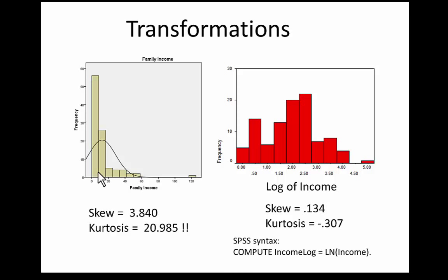Even the log of family income is not distributed close enough to normal to be confident using a z-distribution to estimate probabilities. In fact, it's rare that any real distribution is normally distributed. So why is the normal distribution so important in statistics if real data are rarely distributed normally? A very important distribution that we never actually see is distributed close to normal — and that is the sampling distribution of the mean.